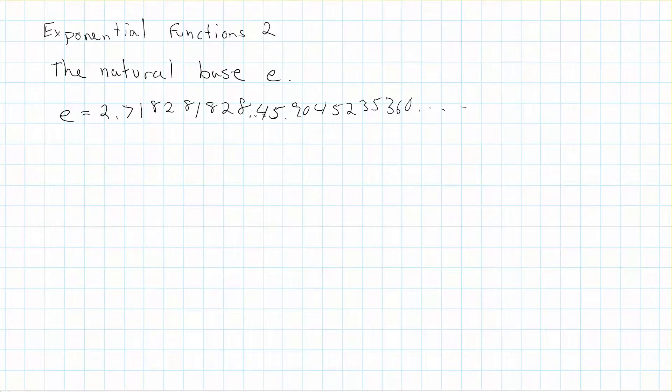So even though when you look at the first 10 decimal spots or so, it looks like there's a pattern repeating, as soon as you get a few more down, you can clearly see there's no pattern that's repeating. So this means, just like the number pi, e is an irrational number.